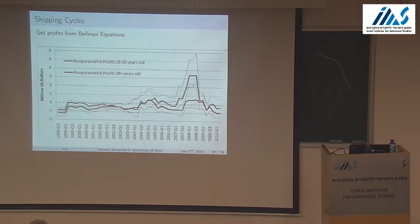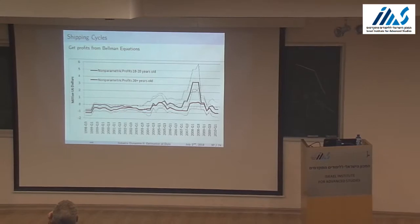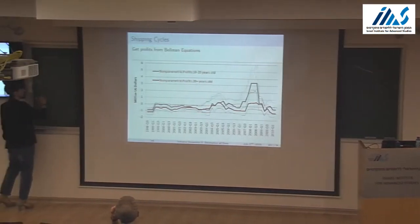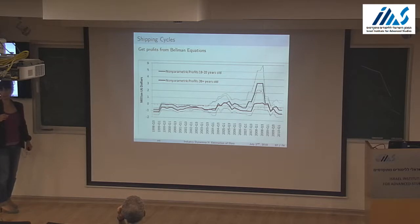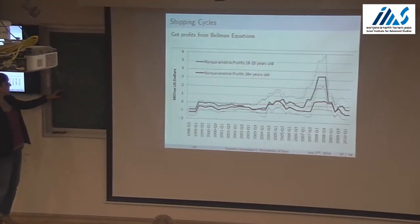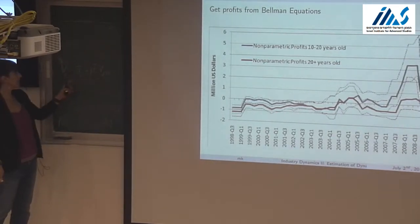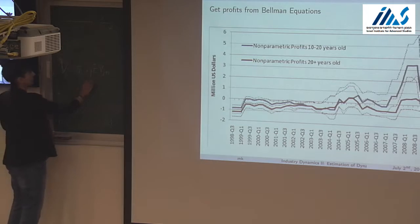Getting profits is literally a subtraction. The value function at age j equals the profit at age j plus the discounted expected value function — when j is very young, there's no exit choice since ships only exit after 25 to 30 years old. I know the expectations because they come from resale prices, so profits are just the difference between the current value and the expected continuation value.